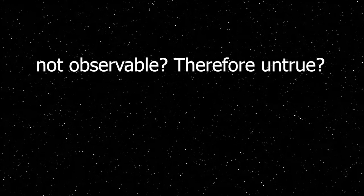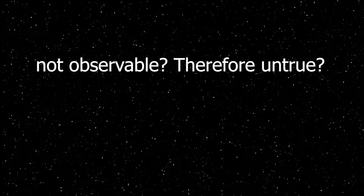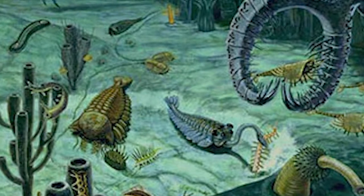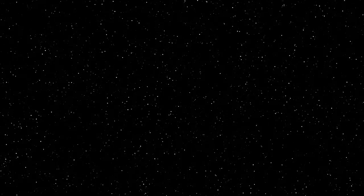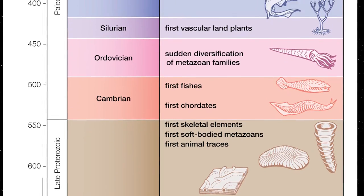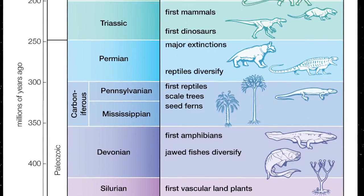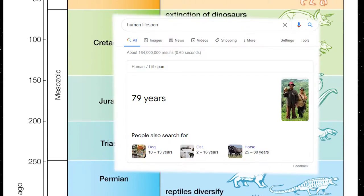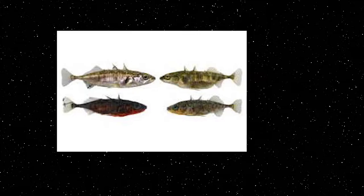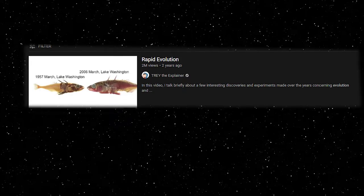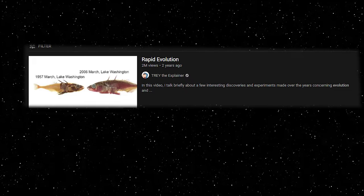To say evolution is not observable and therefore cannot be a scientific theory or fact is quite frankly a fool's errand, and it shows a lack of understanding of the study. Evolution may not be observable firsthand, like gravity for example, but evidence for the occurrence of evolution is most certainly present. Evolution can take so many millions of years that we can't observe it firsthand — we can't see a bacterium turn into a human because it doesn't happen in 70 or fewer years. But rapid evolution is a thing, and I'll link a video in the description from a YouTuber named Trey the Explainer on rapid evolution, so if you want to see something change in your lifetime, there's something for you.